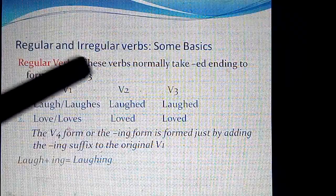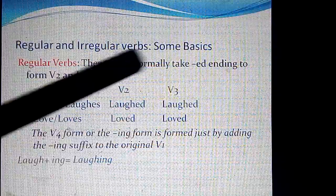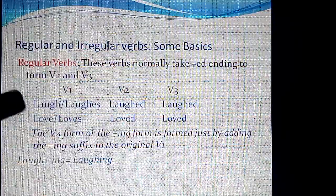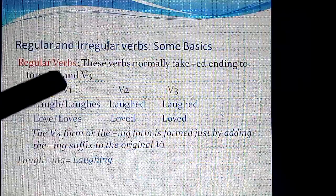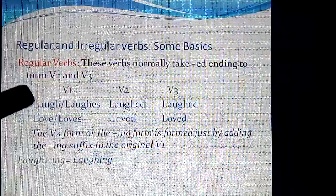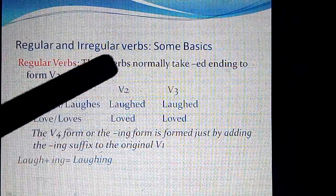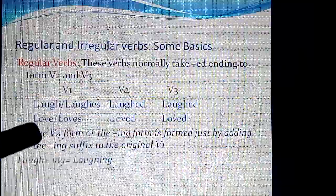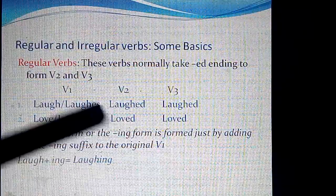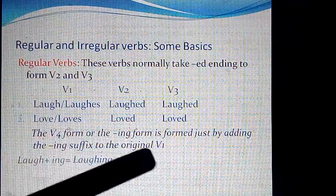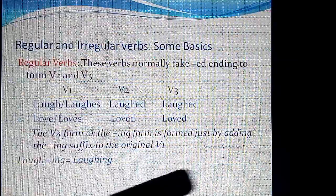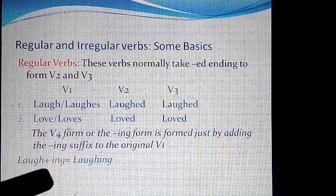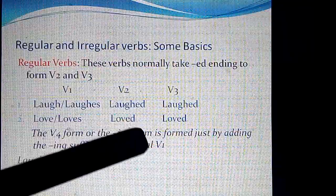Regular verbs normally take an -ed ending to form V2 and V3. So V1, V2, V3 — first example: laugh, laughs. The root form is 'laugh' and 'laughs' when -s is added. Then V2 is 'laughed' and V3 is also 'laughed'. Then 'love', 'loves', 'loved', 'loved'. The V4 form, or the -ing form, is formed by adding -ing to the original V1: laugh + ing = laughing.